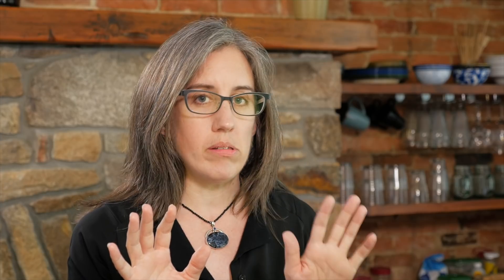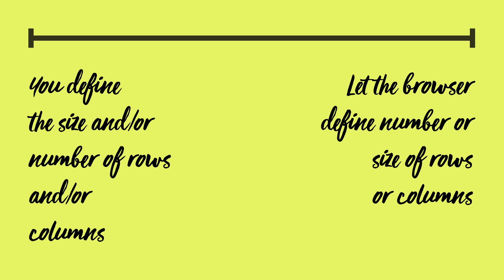One thing about CSS Grid is that there's this concept of explicit and implicit. As you learn Grid, you'll hear those words a lot. You can explicitly define the size and the number of rows and columns, or you can do nothing about the number of columns or rows, and let the browser define how many rows and columns there are going to be, or how big the rows and columns are going to be.